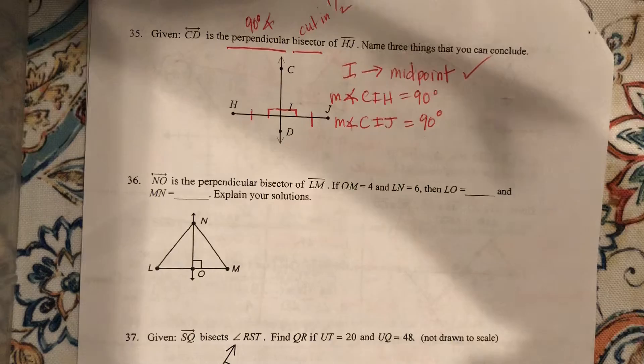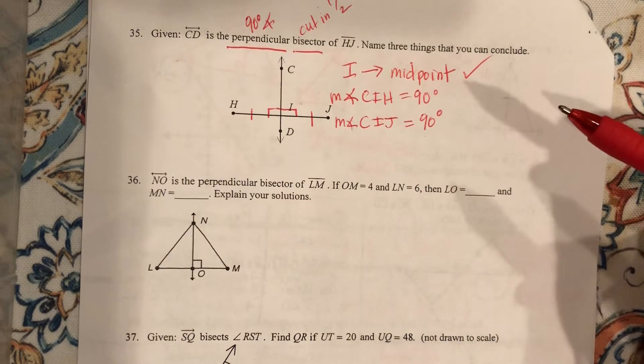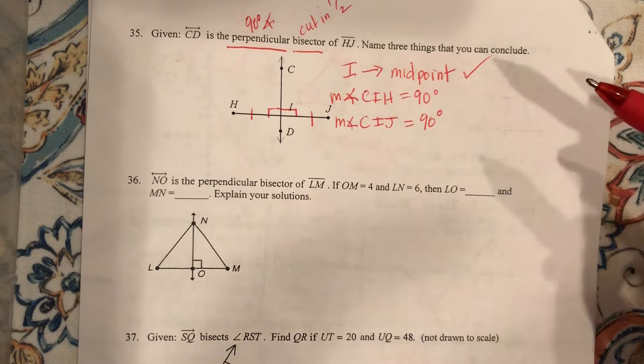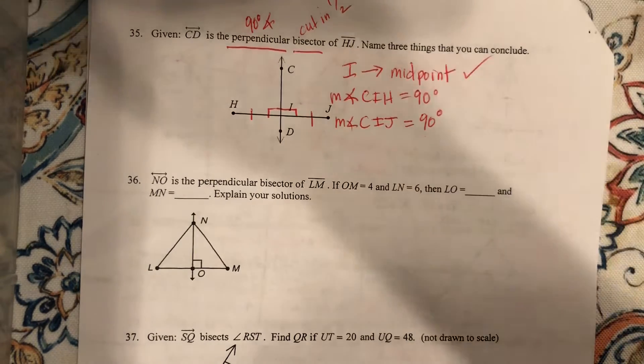That's pretty much all you have to do. CIH is 90, CIJ is 90. That's basically all you can do. The perpendicular bisector gives you that utility where you can figure those things out.